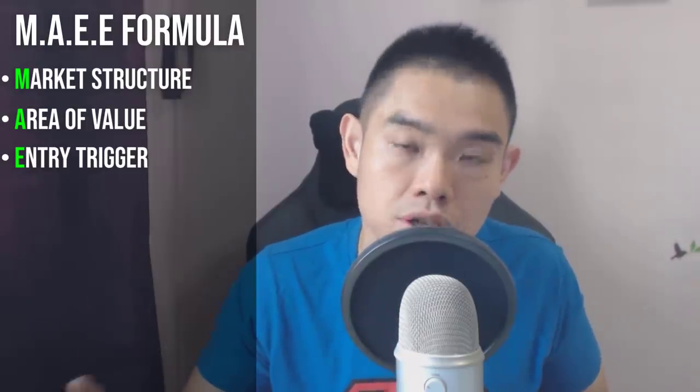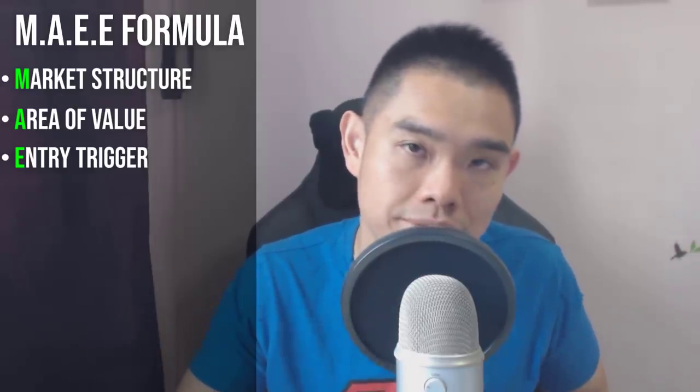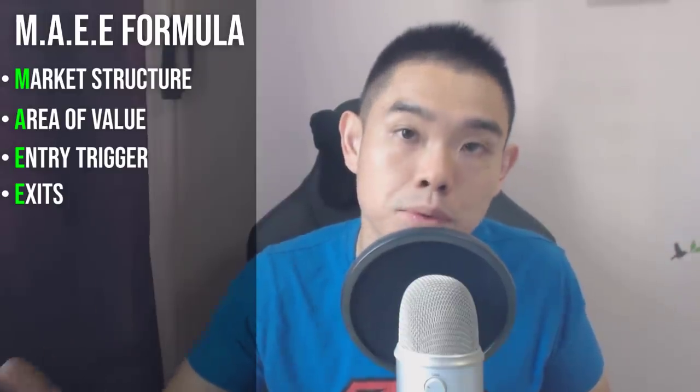The third element is E — entry trigger. Is there a valid entry trigger for your trading setup? An entry trigger could be something like a hammer, a bullish engulfing pattern, or a shooting star. This is where candlestick patterns shine — they're very useful as entry triggers to get you into a trade. And finally, the second E — exits. Where will you exit the trade if you're wrong? Where is your stop loss, and where is your target profit if the market moves in your favor?